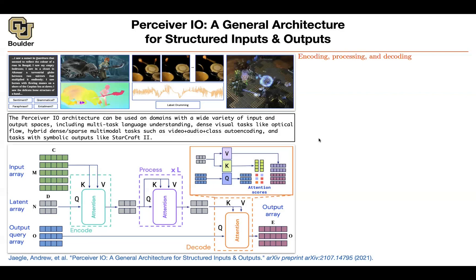That's the architecture. The intuition is that there are encoding, processing, and decoding stages — very similar to how you process data in any data analysis task. As a data scientist, you read data from your file system, do some visualization and transformations, clean it, and write it back. This architecture does the same thing: it takes a matrix as input and outputs another matrix.